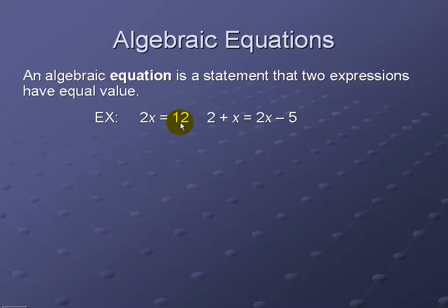In the next example, 2 plus x equals 2x minus 5. Here again we see 2 plus x is the left-hand side of our equation and 2x minus 5 is the right-hand side.